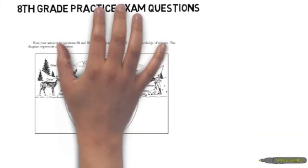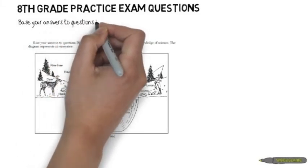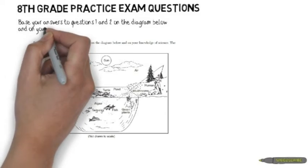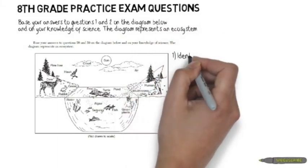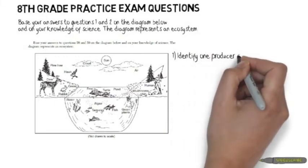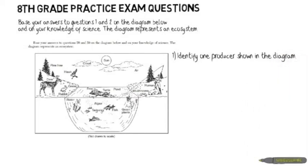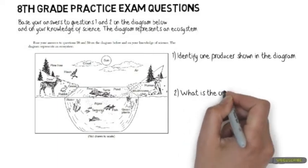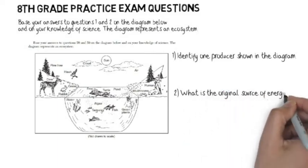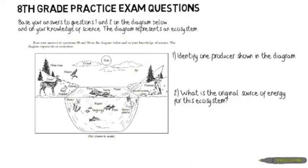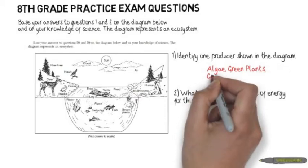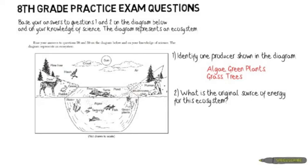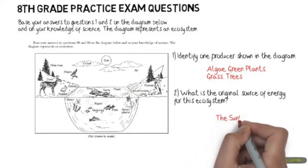These questions come from the intermediate science exam in New York. Base your answers to questions one and two on the diagram below. Number one: identify one producer shown in the diagram. Number two: what is the original source of energy for this ecosystem? The acceptable answers for number one include algae, green plants, grass, and trees — only use ones that were labeled. The original source of energy in the ecosystem is the Sun.